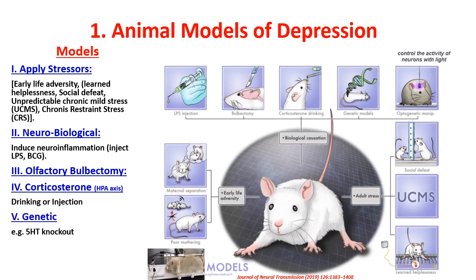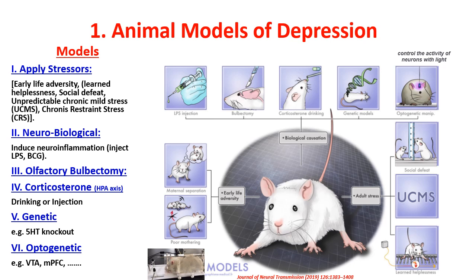There is also a genetic method using the serotonin knocked-out mouse, and a technique called optogenetics, where we control the activity of neurons via light, applied to the VTA (ventral tegmental area) and the medial prefrontal cortex.